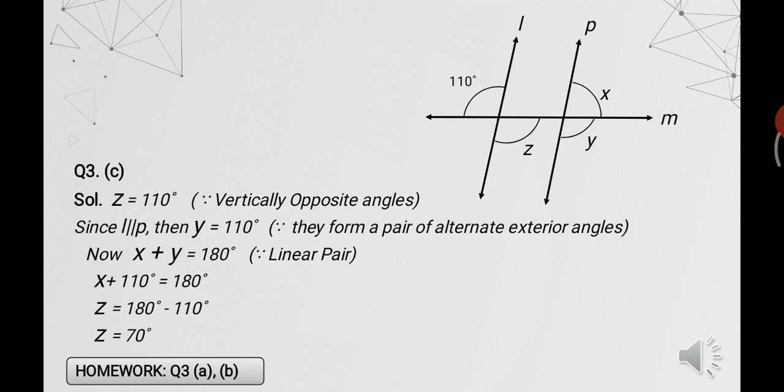To find x: on line P, x and y form a linear pair, so x plus y equals 180 degrees. Substituting y equals 110 degrees gives x plus 110 equals 180 degrees. Transposing 110 to the right hand side, we get x equals 70 degrees. Dear students, parts a and b of question number 3 are your homework since part c has been done here. If you have any doubt or question, you can contact me — the contact details are provided in the coming slide.